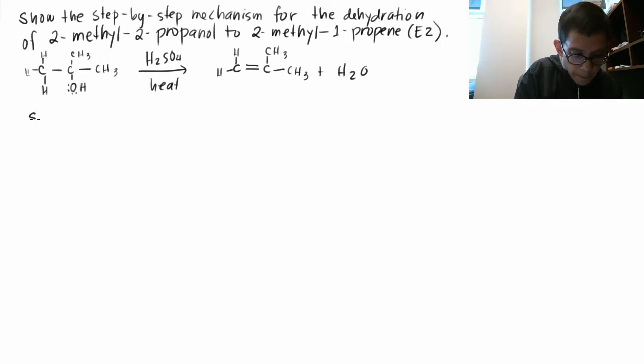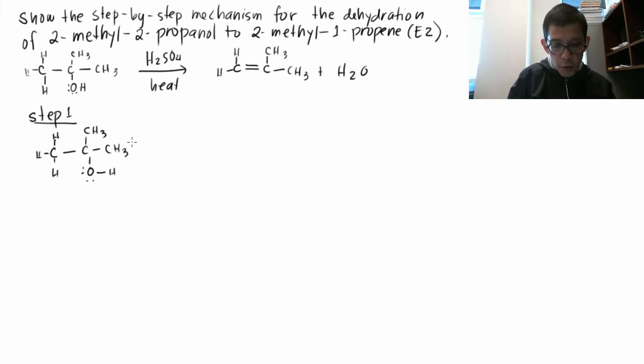Okay, step one. Step one is the protonation of the OH on your alcohol. So C-H, H, H, CH3, OH, and CH3. Okay, H2SO4 in solution dissociates into H+ and HSO4- because it's an acid.